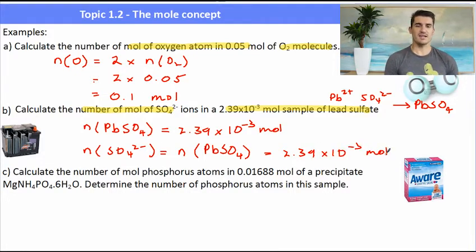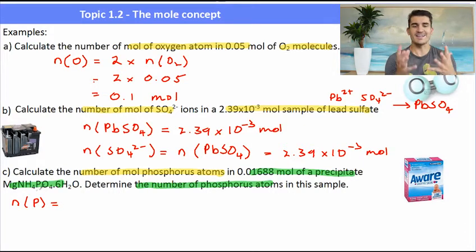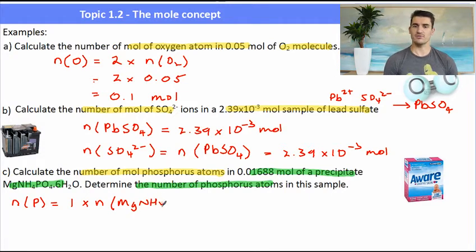For C. Calculate the number of mole of phosphorus atoms in a precipitate, which has a really long name. Determine the number of phosphorus atoms in the sample. Now with that formula, we have some magnesium, some ammonia, some phosphate. And then we have these six waters attached at the end. But that's not the important thing. The important thing is the phosphorus. What is the relationship between phosphorus and everything else? Well, in that molecule, there is only one phosphorus atom. So that means the number of moles of phosphorus will be the same as the number of moles of the precipitate. Whatever that formula is. So we have one times the number of moles of that very long precipitate.